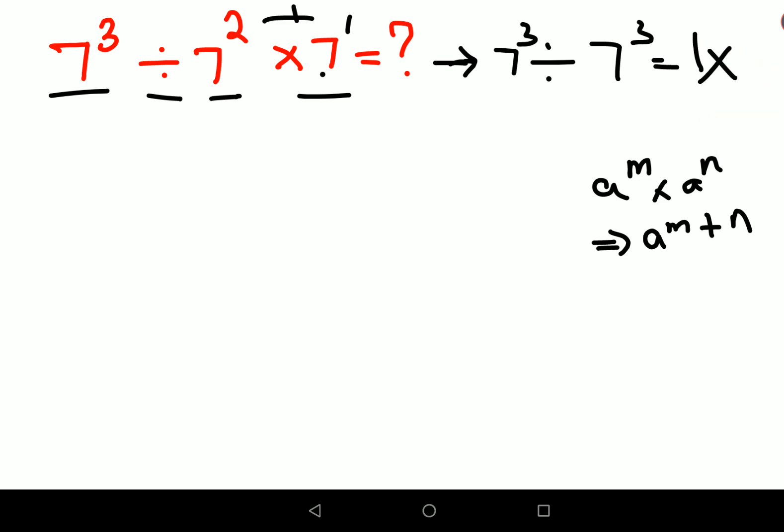Why? Because if an operation has only division and multiplication signs, you apply precedence from left to right.